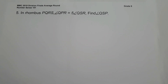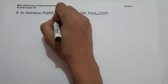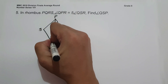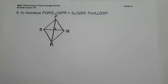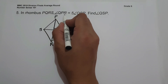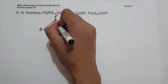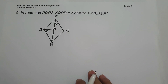On number 5, in rhombus PQRS, angle QPR equals 5 times the measure of angle QSR. Find the measure of angle QSP. Let us illustrate the rhombus PQRS with a diagonal. The diagonals of a rhombus are perpendicular, so they meet at 90 degrees. Angle QPR is 5x and angle QSR is x.